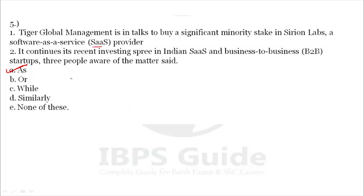Students, you have to have a fair idea of conjunctions. Conjunctions are basically three types: coordinating conjunction, subordinating conjunction, and co-relative conjunction. These are the conjunctions which are also the connectors. At first you have to understand the meaning of the sentence and then you put the conjunction.